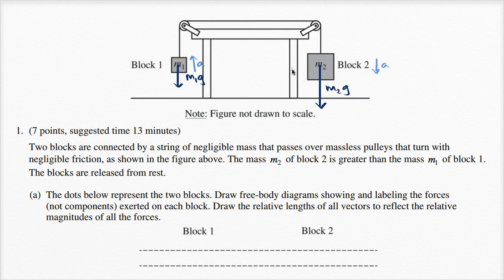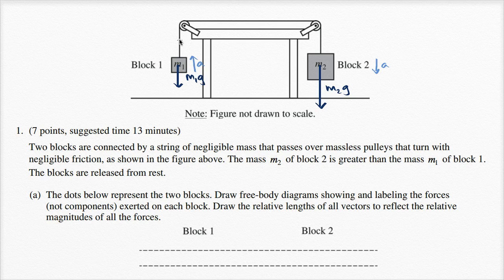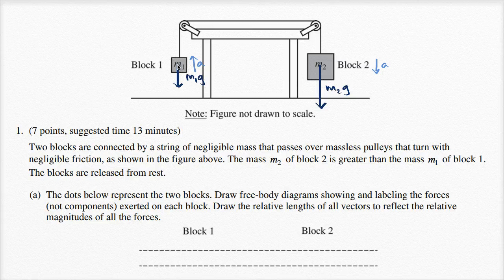We're not done yet, because we also have the upward pulling force of the tension in the string. The tension is going to be pulling upwards on both blocks. In order for block one to accelerate upwards, the magnitude of the tension has to be larger than the magnitude of the weight m1g. In order for block two to accelerate downwards, the magnitude of the tension has to be less than the downward force of gravity m2g. So the magnitude of the tension is going to be in between the magnitudes of these two weights — larger than m1g but smaller than m2g.